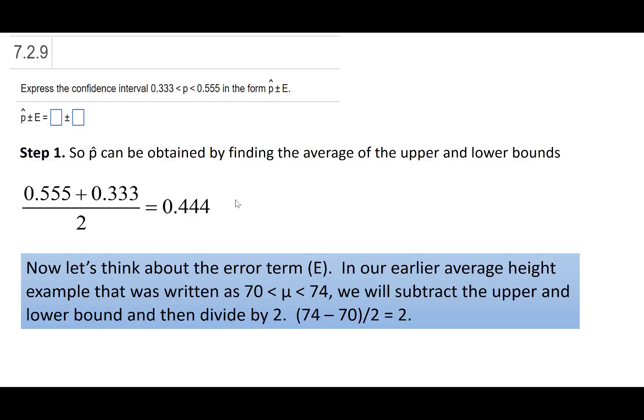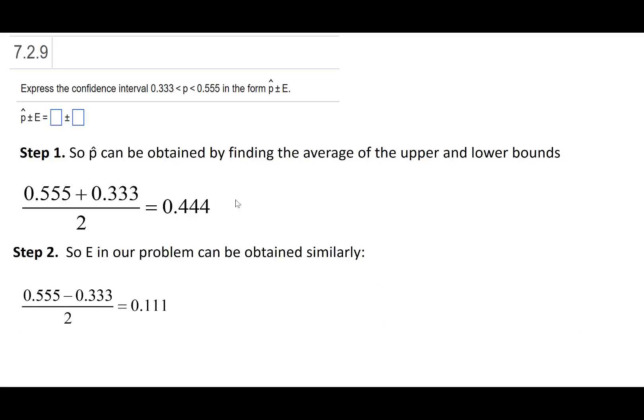And now divide by 2 because we have plus this and minus this. So it's divided by 2 every time. And we get 2, which is what we started off with. So I'm going to do the same thing in our problem. The E in our problem, we say 0.555 minus 0.333 divided by 2. So we ultimately get 0.444 plus or minus 0.111.